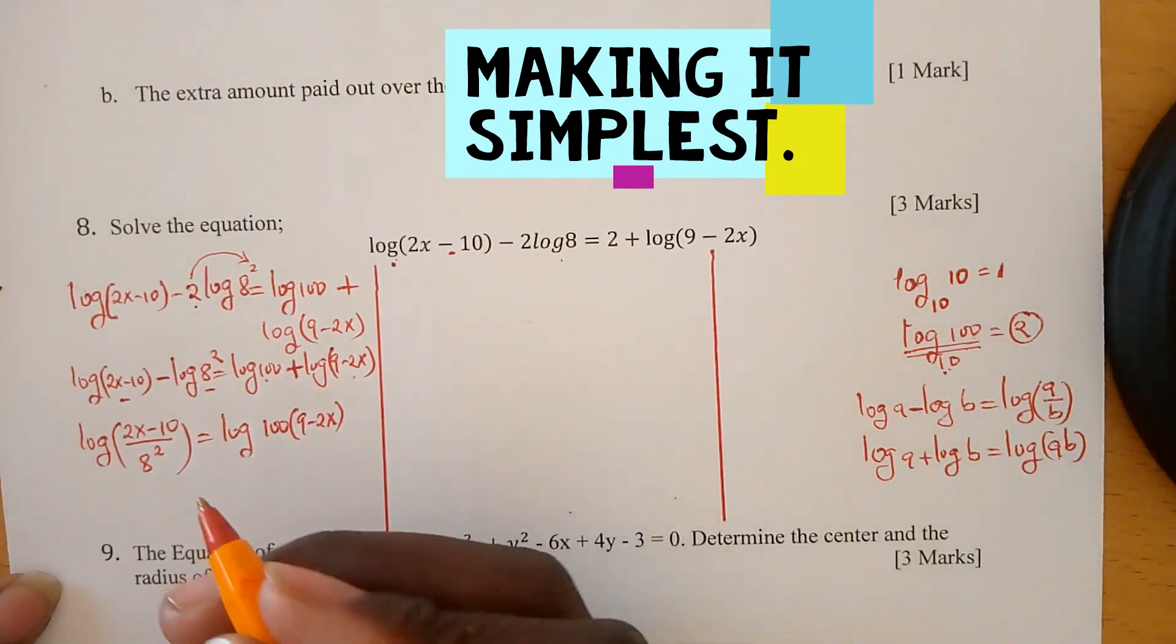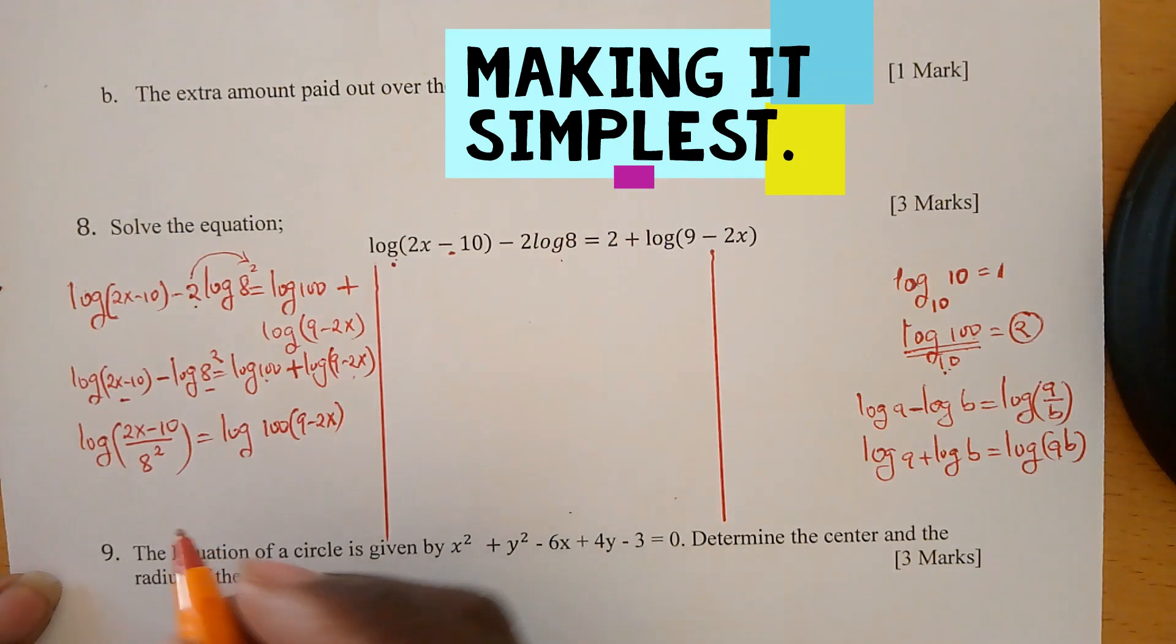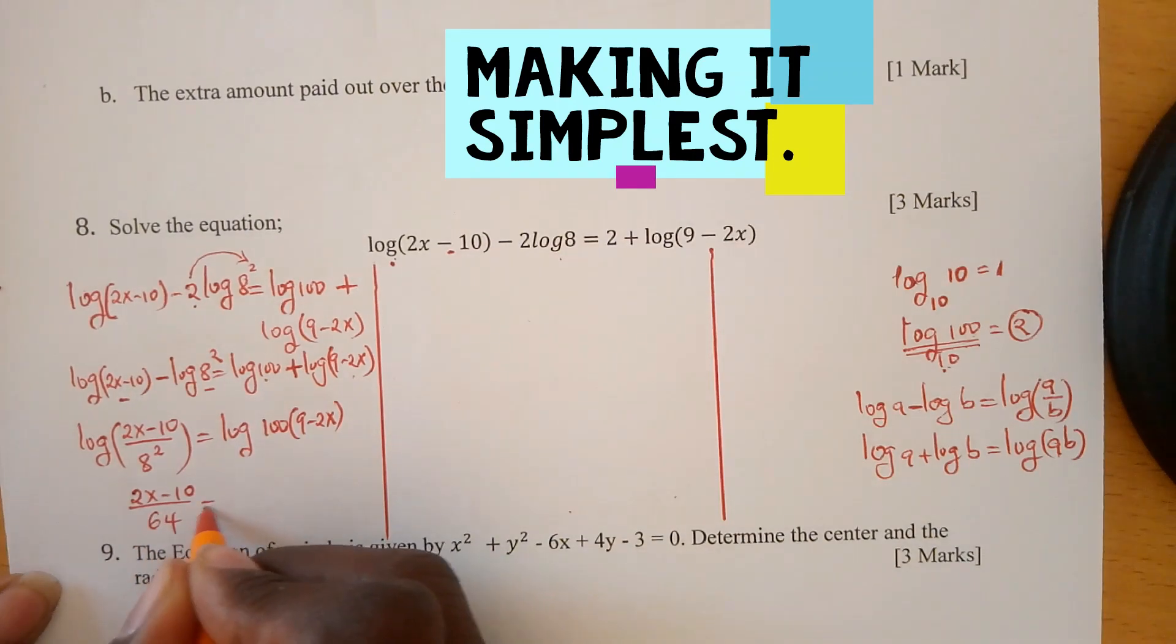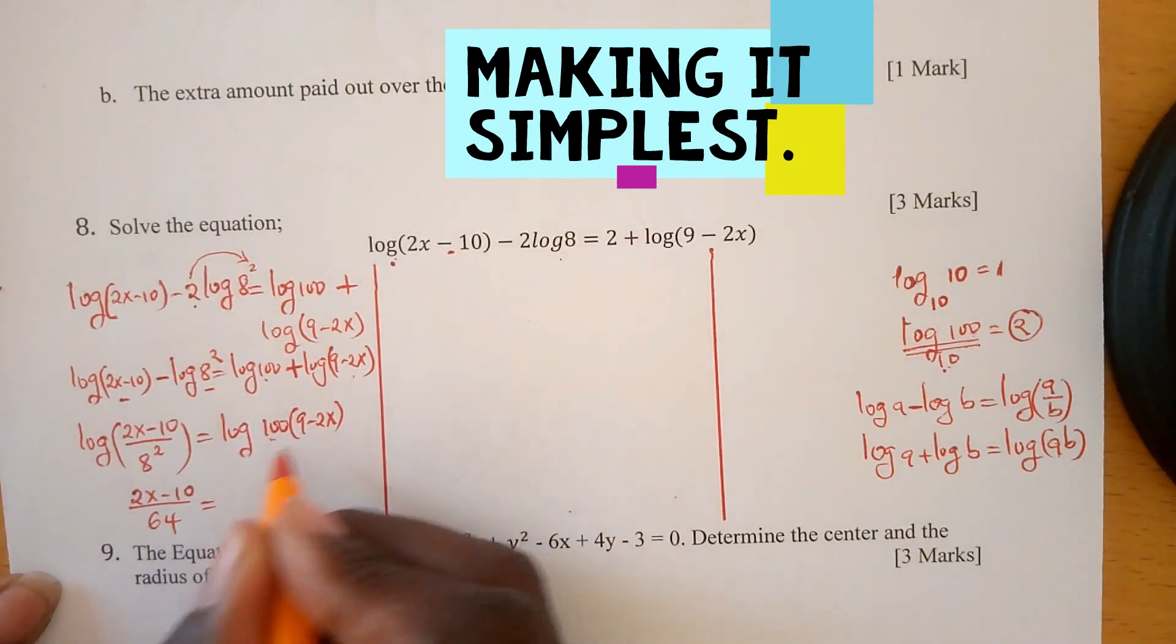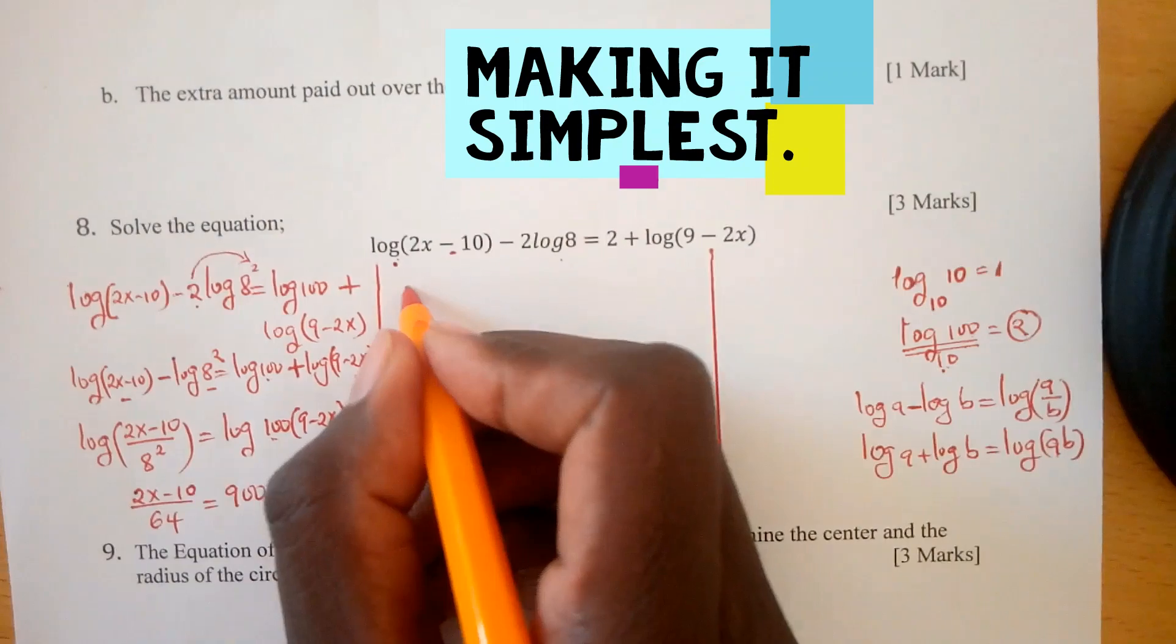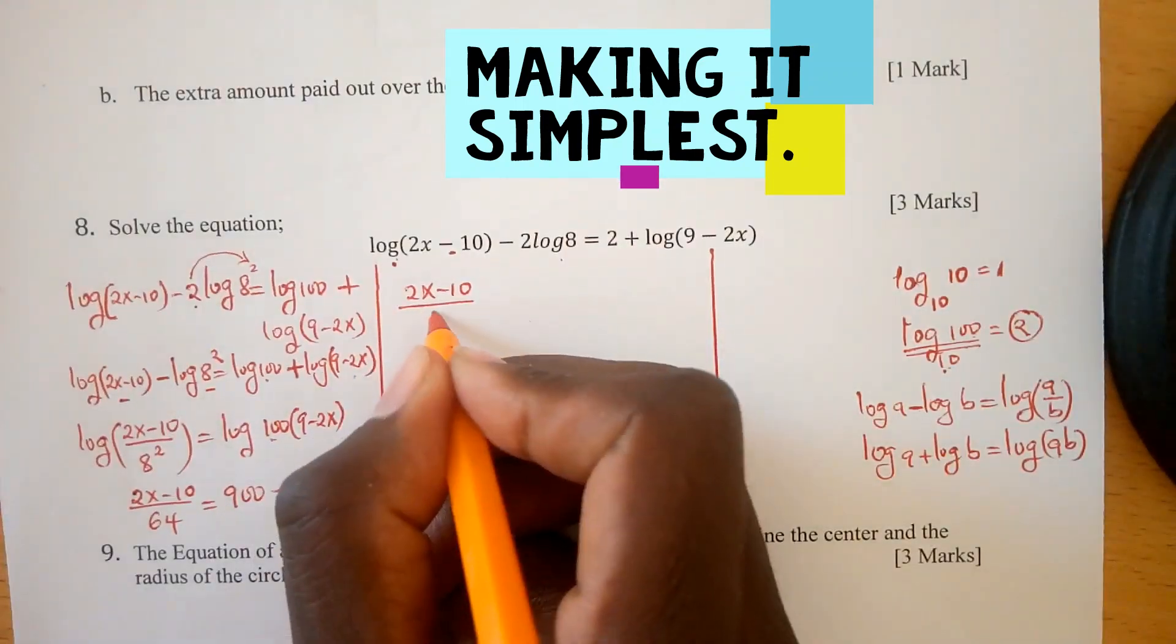From here we can drop logs and remain with (2x - 10)/64 = 100(9 - 2x). We can open this bracket: (2x - 10)/64 = 900 - 200x.